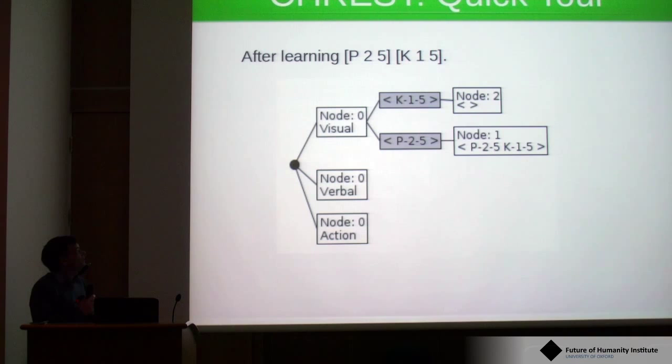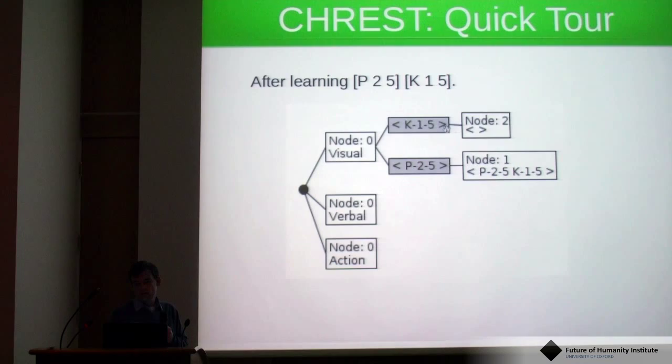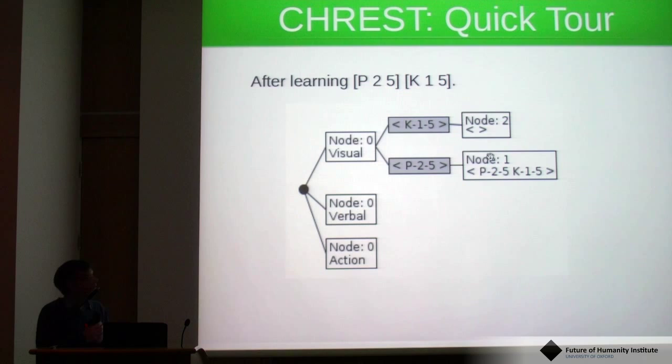The discrimination network is built up gradually. We have a division of the network based on modality — whether you see something, hear something, or whether it's an action. The network has some tests represented by the shaded nodes, and the clear nodes are the ones it's trying to reach. These are the chunks, the familiar patterns that are stored in long-term memory.